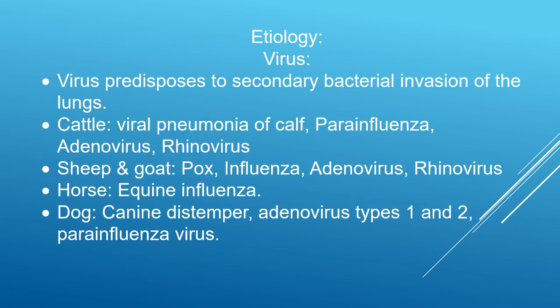Now we see various etiologies. First, viral etiology — viral pneumonia is a very common cause. The virus predisposes to secondary bacterial invasion, making it especially dangerous. In cattle, examples include viral pneumonia of the calf, parainfluenza, adenovirus, and rhinovirus. In sheep and goat, sheeppox virus, influenza, adenovirus, and rhinovirus.